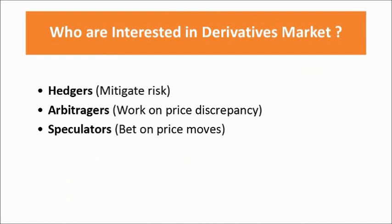The second kind of participant is the arbitrator. An arbitrator is a person who basically identifies the discrepancy in prices between different markets. It is a bit difficult to understand at this level how an arbitrator works, but you can understand that an arbitrator is also a kind of person who is interested in derivatives. We will see various arbitrator strategies in our future sessions.